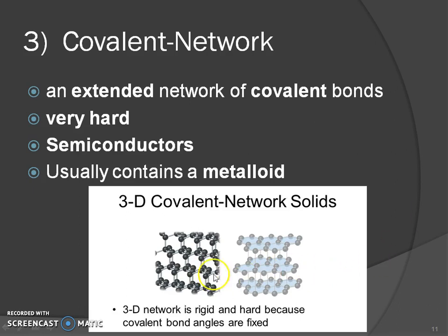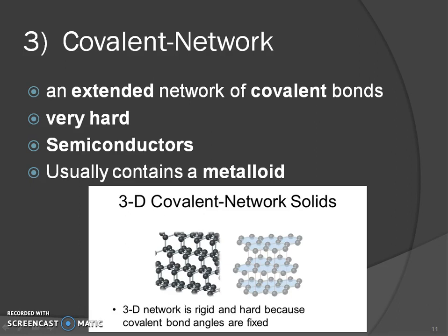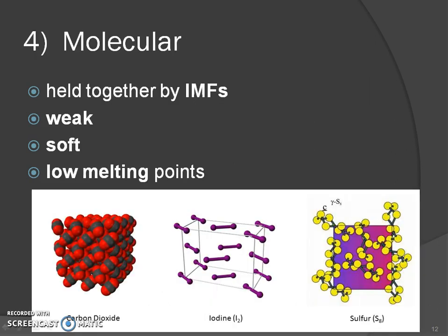Because of the way they are structured and their bond angles, covalent network solids become rigid and hard. They are covalent bonds, but because they are bonded together as a whole network, they have different properties than normal molecular solids. Molecular solids are held together by IMFs — they're weak, soft, and have low melting points. Carbon graphite is similar in composition but placed in a different category due to its network structure and properties.